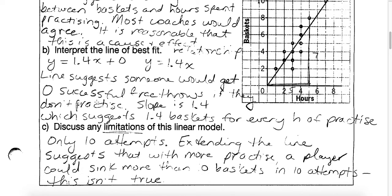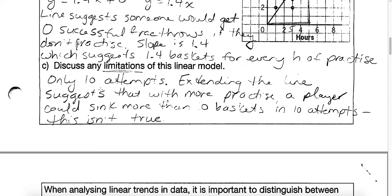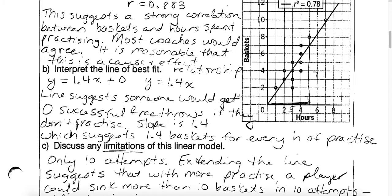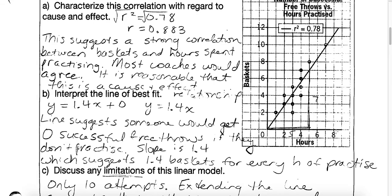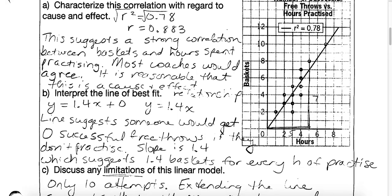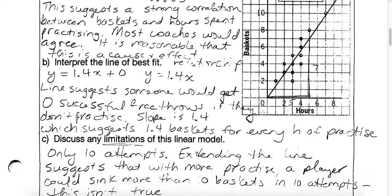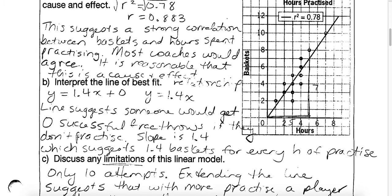That line suggests that somebody would get zero successful free throws if they didn't practice — though you could still not practice, get lucky, and make baskets. The slope also means that for every one hour of practice, we would get 1.4 baskets. This is a little odd because we only had 10 attempts. If we extended the line of best fit really long, it might suggest that if we practiced for eight hours, we would make 11 baskets — but we're only doing 10 free throws. So that would be an example of a cause and effect relationship.